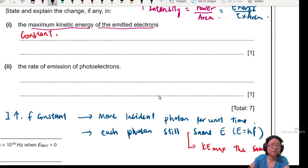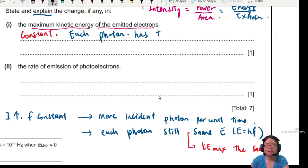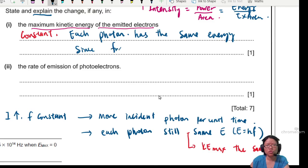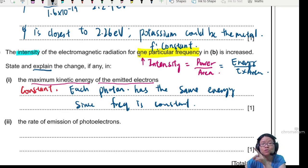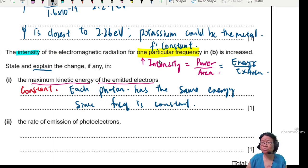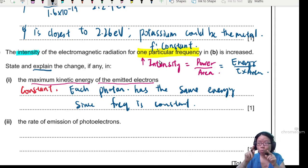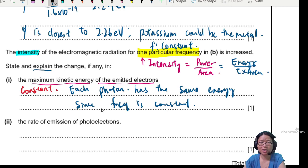If they ask to explain: the maximum kinetic energy remains constant because each photon has the same energy since frequency is constant. When they say 'one particular frequency,' it means that specific frequency does not change — so the Ke max would be constant because each photon has the same energy.